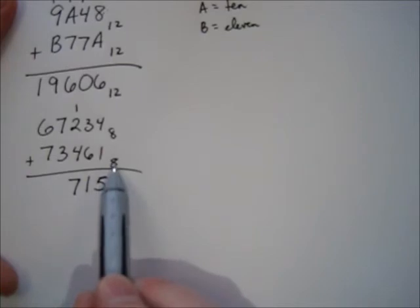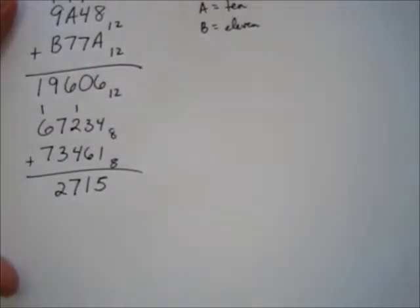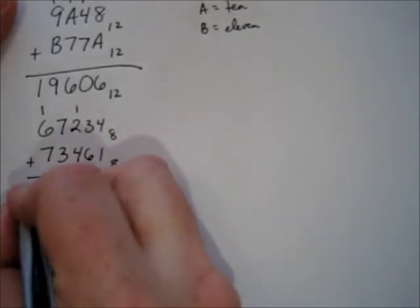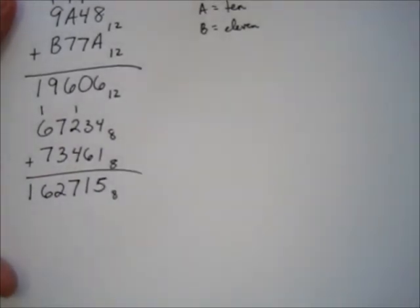Next column. 1 plus 2 is 3, plus 4 more is 7. Just write the numeral for 7. 7 plus 3 is 10. If you're in base 8, 10 is 1 eight and 2 left over. And 1 plus 6 is 7, and 7 more is 14, which is 1 eight and 6 left over. Don't forget to write your subscript of 8.